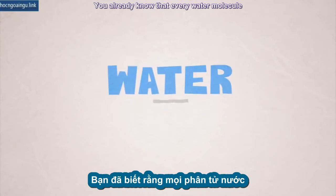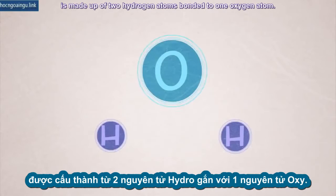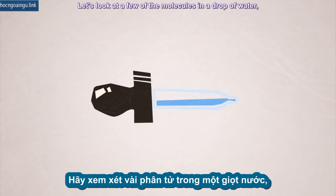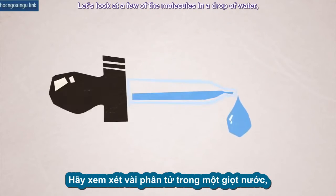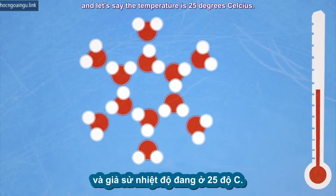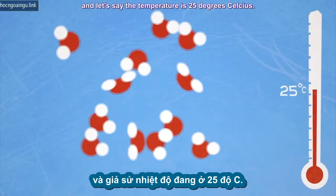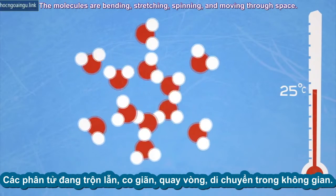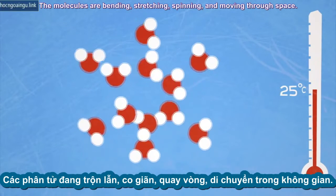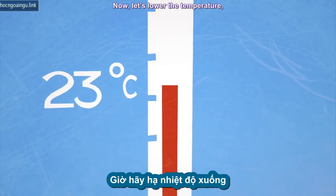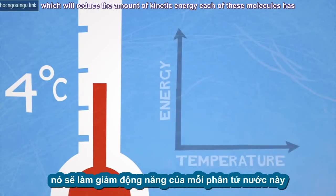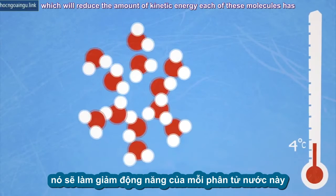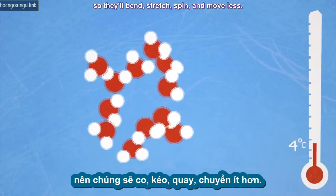You already know that every water molecule is made up of two hydrogen atoms bonded to one oxygen atom. Let's look at a few of the molecules in a drop of water, and let's say the temperature is 25 degrees Celsius. The molecules are bending, stretching, spinning, and moving through space. Now, let's lower the temperature, which will reduce the amount of kinetic energy each of these molecules has. So they'll bend, stretch, spin, and move less.